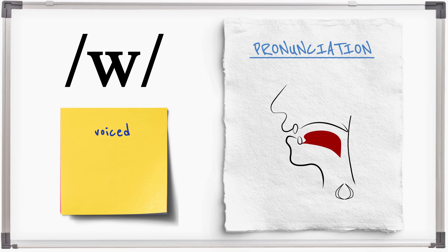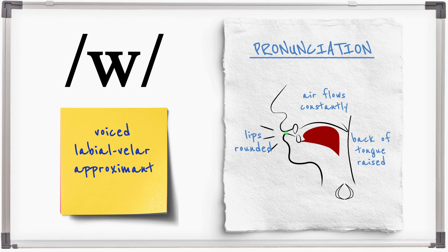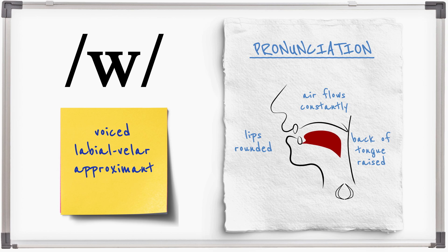W is a voiced labial-velar approximant, made by rounding the lips and moving the back of the tongue towards the velum. Air is allowed to flow throughout, making the consonant vowel-like. The vocal folds vibrate constantly.